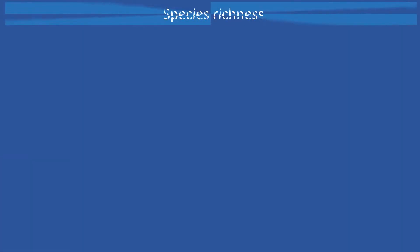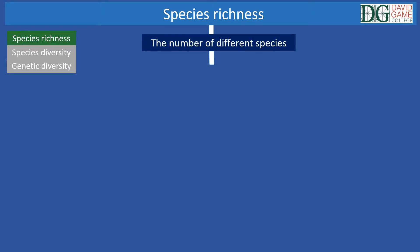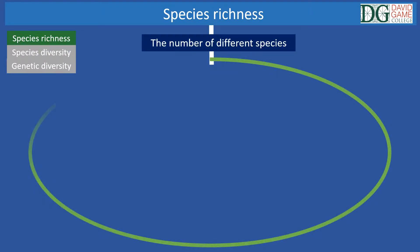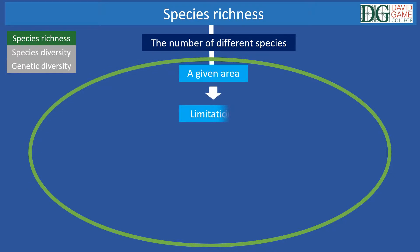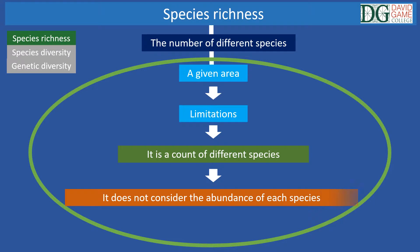Species richness is the number of different species present in a given area. The more species are present, the richer the area is. However, species richness has limitations, because it is simply a count of different species and does not consider the abundance of each species.